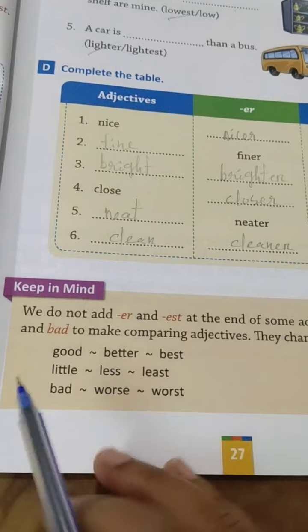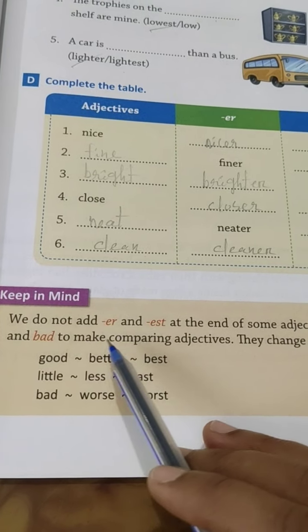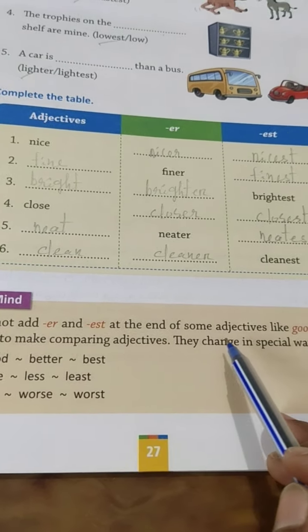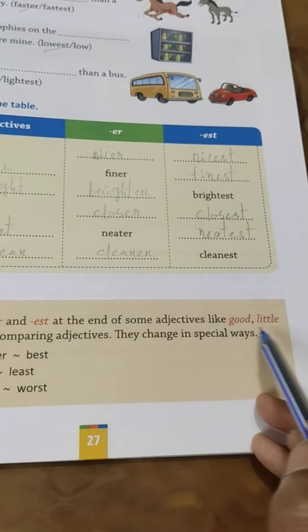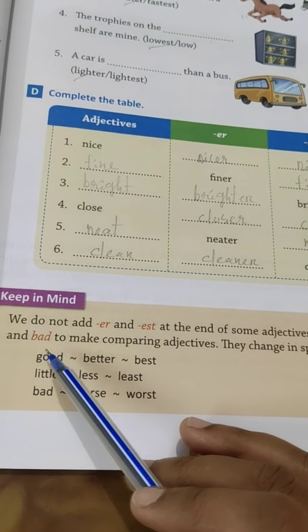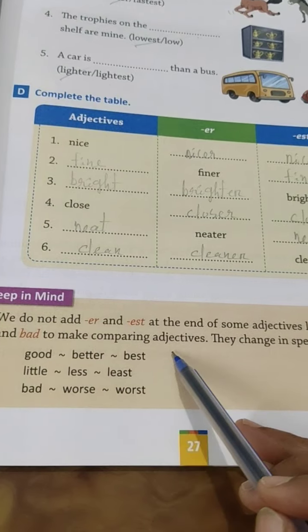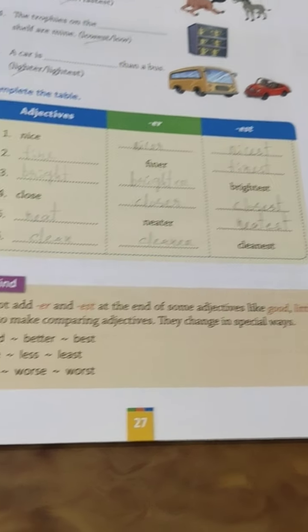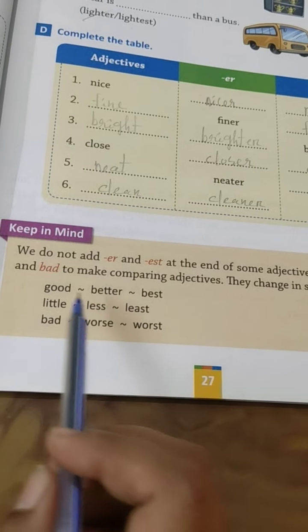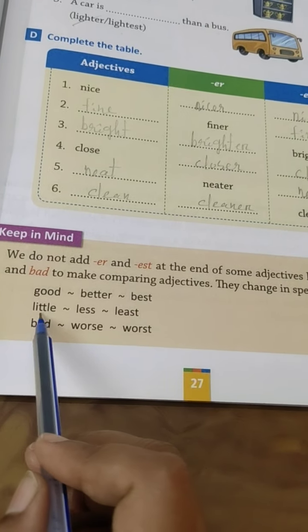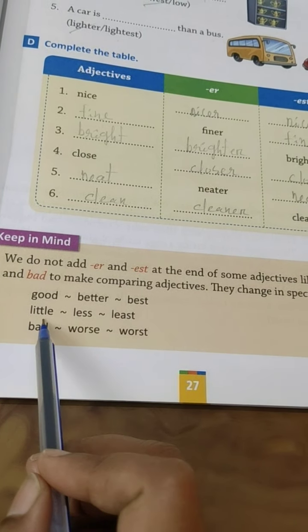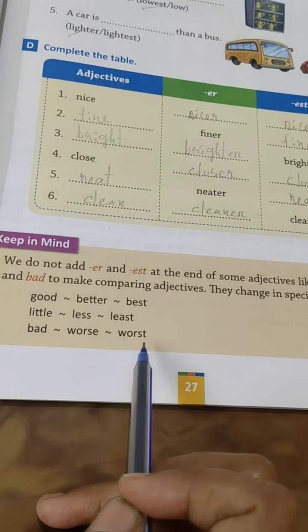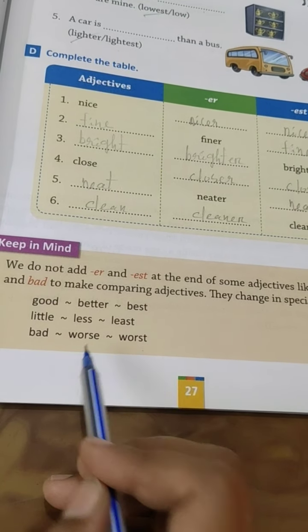Keep in mind, children — we do not add ER and EST at the end of some adjectives like good, little, and bad. To make comparing adjectives, they change in special ways: good, better, best; little, less, least; bad, worse, worst. You keep in mind.